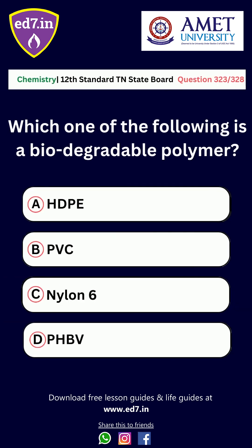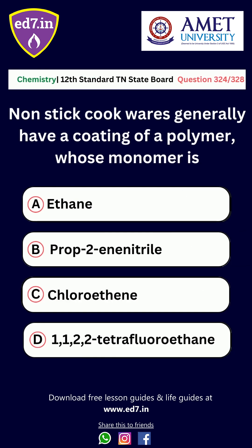Question number 322: Which one of the following is a biodegradable polymer? Option A: HDPE, Option B: PVC, Option C: Nylon 6, Option D: PHBV. The correct option is Option D, PHBV.